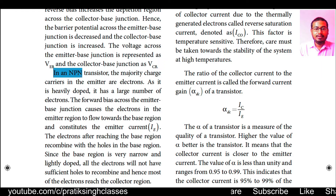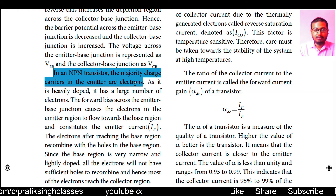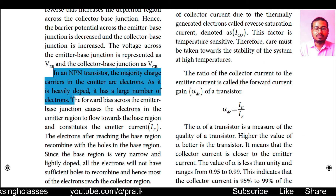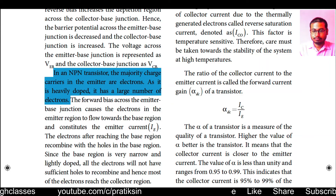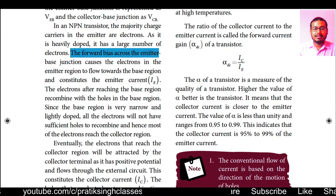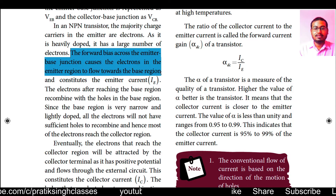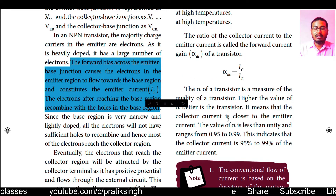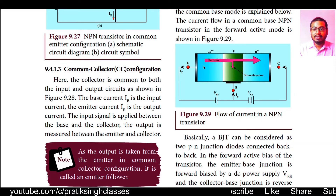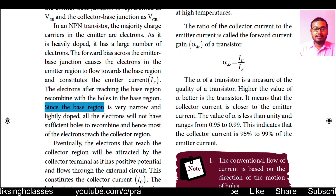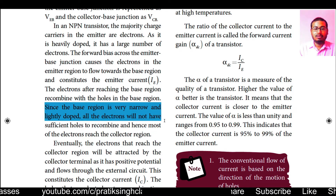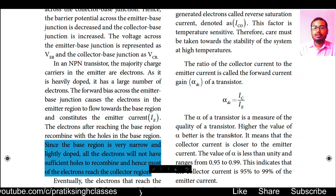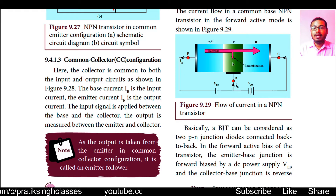In an NPN transistor, the majority charge carriers in the emitter are electrons, as it is heavily doped and has a large number of electrons. The forward bias across the emitter-base junction causes electrons in the emitter region to flow towards the base region, constituting the emitter current. The electrons reaching the base region recombine with holes there. Since the base region is very narrow and lightly doped, not all electrons have sufficient holes to recombine with, so most electrons reach the collector region.